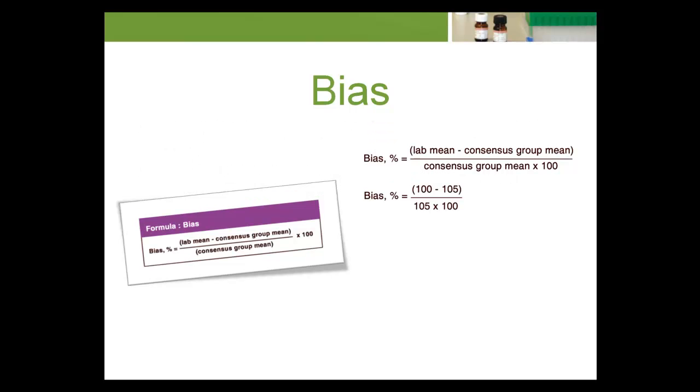For example, in the LIS, we determine that our laboratory mean for a test is 100, and using an interlaboratory report, we find that the consensus group mean for that same test is 105. We can use these values to calculate a bias percent of negative 4.8 percent.